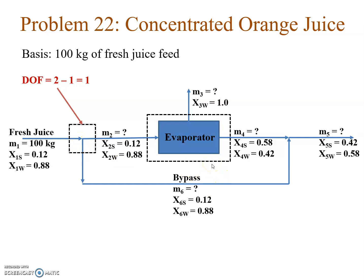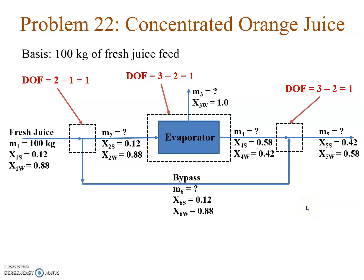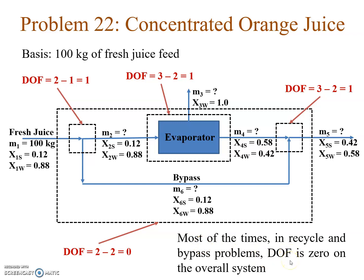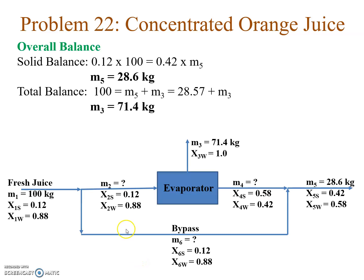At the evaporator there are three unknowns and two independent balance equations, so degree of freedom is 1. At the mixing point there are three unknowns and two balance equations, so degree of freedom is 1. For the overall system there are two unknowns, m5 and m3, and two balance equations, so degree of freedom is 0. In recycle and bypass problems the degree of freedom is often 0 on the overall system, so that is the best place to start.